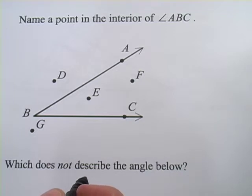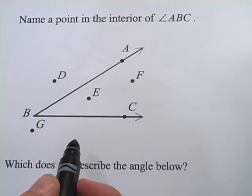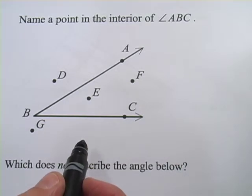These next problems have to do with some of the terminology and ways of naming angles. This first question says, name a point in the interior of angle ABC.